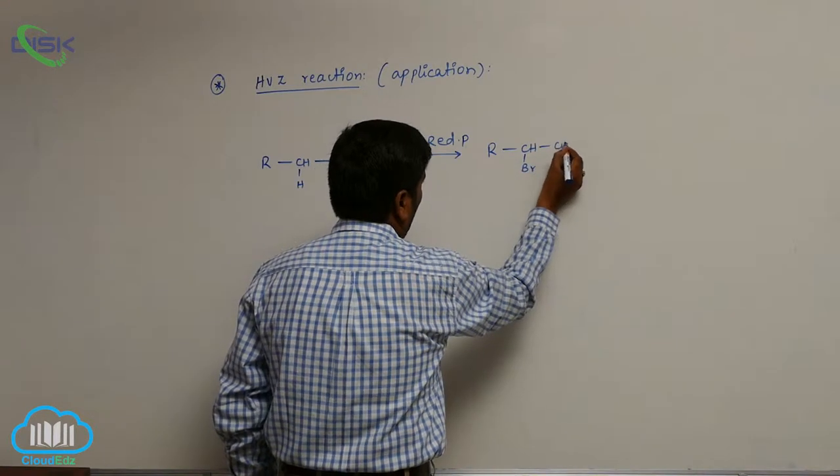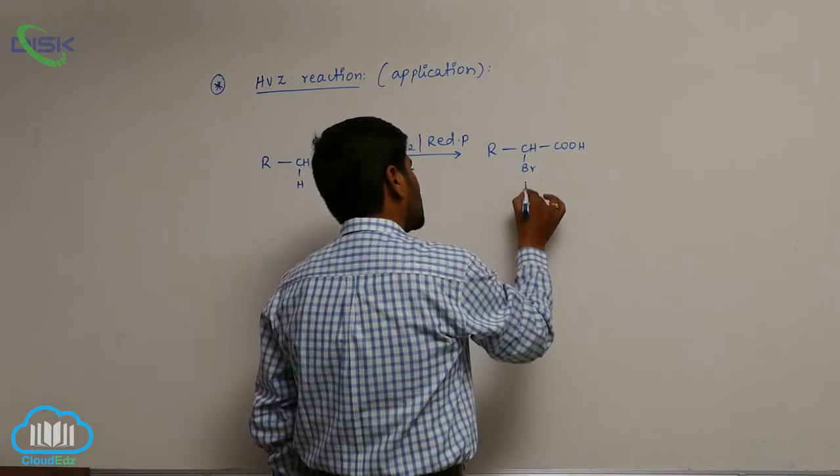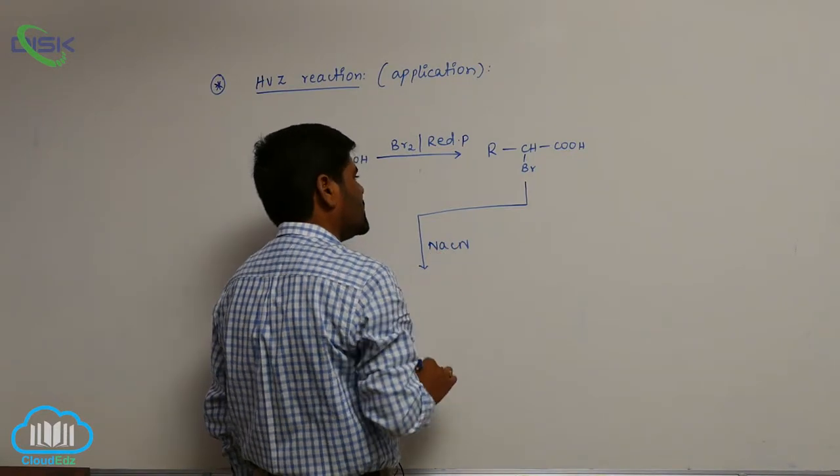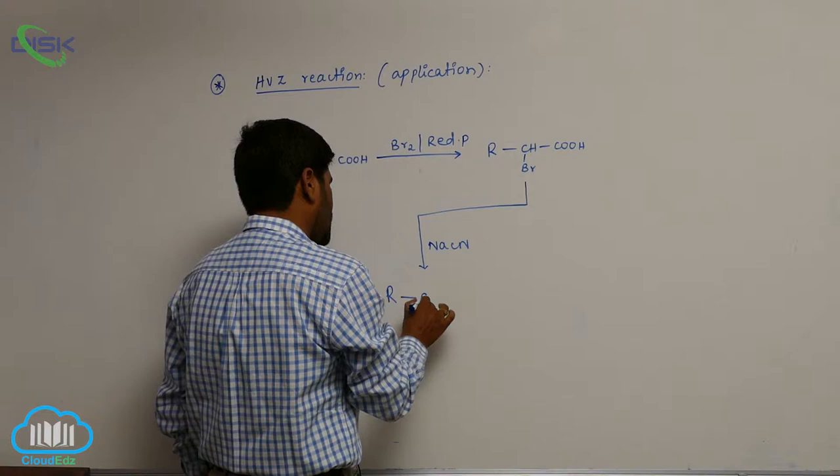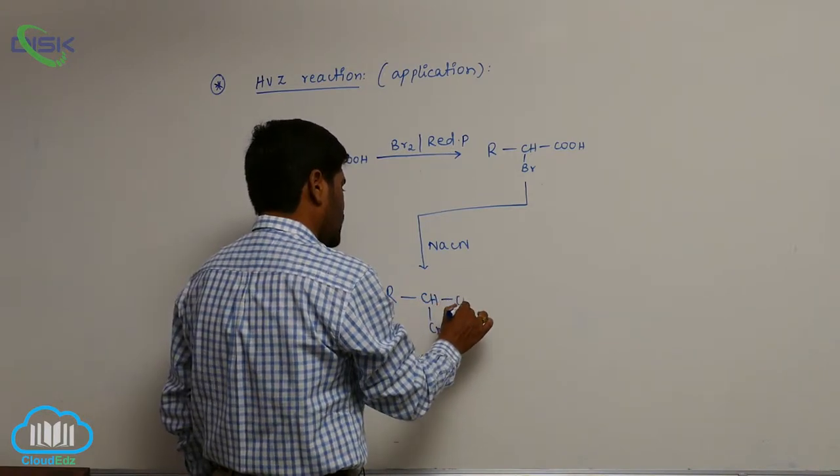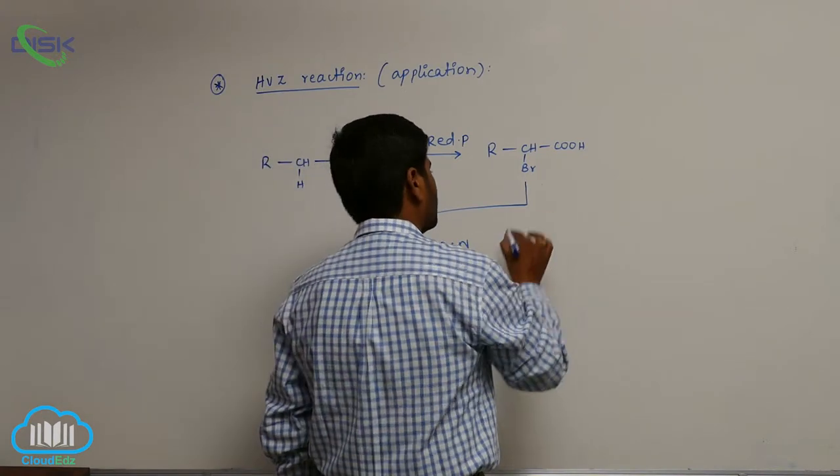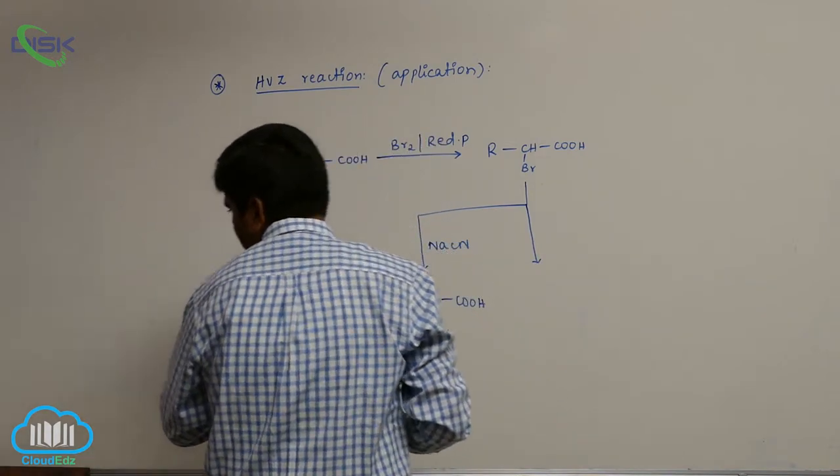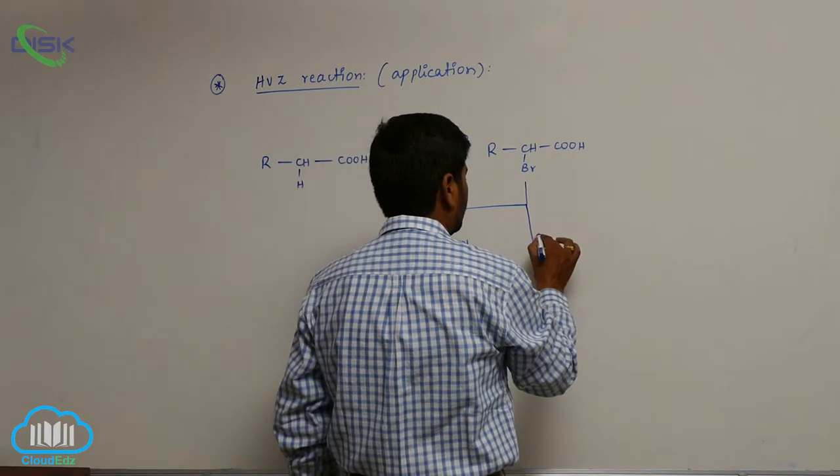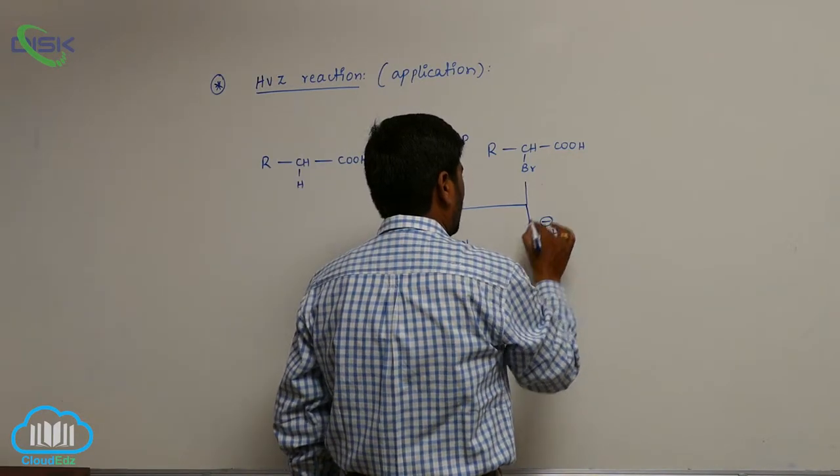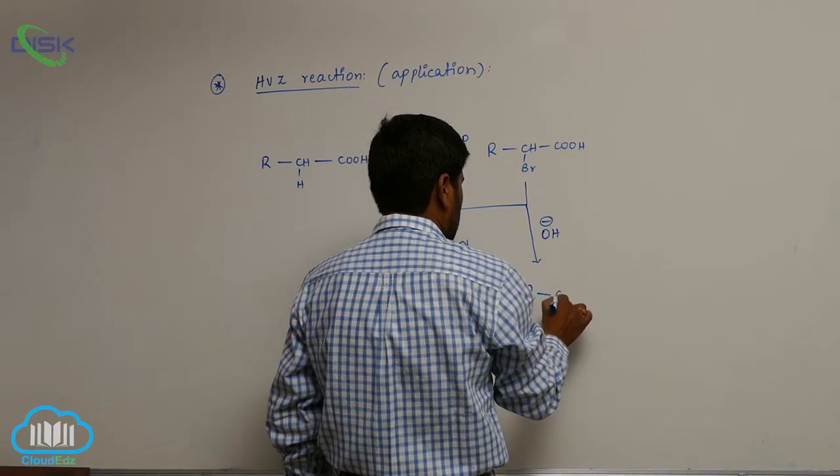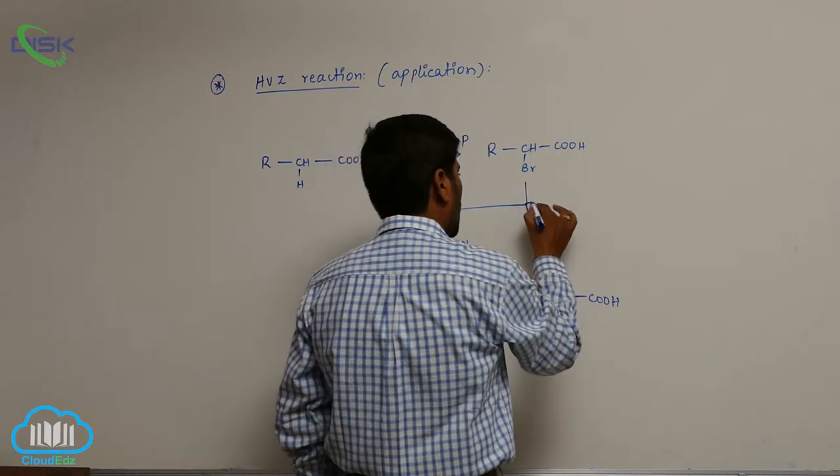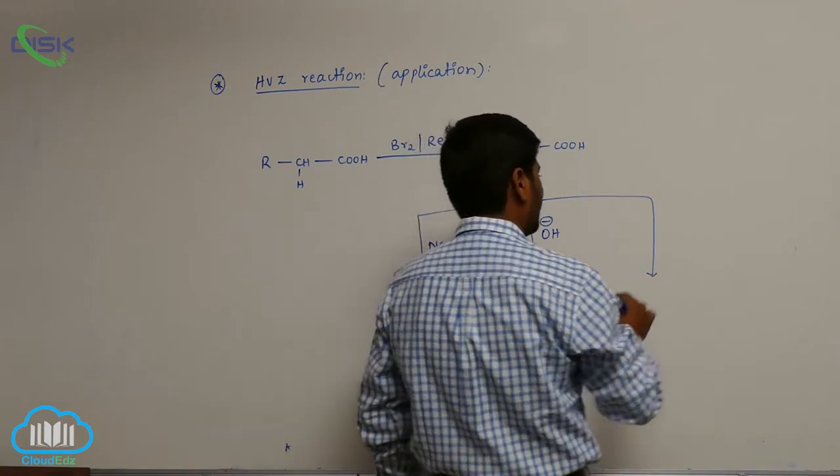This alpha bromocarboxylic acid, when we react with sodium cyanide, forms CN then COOH - alpha cyano acid. Second one, on hydrolysis, when it is reacted with base, it converts into alpha hydroxy carboxylic acid.